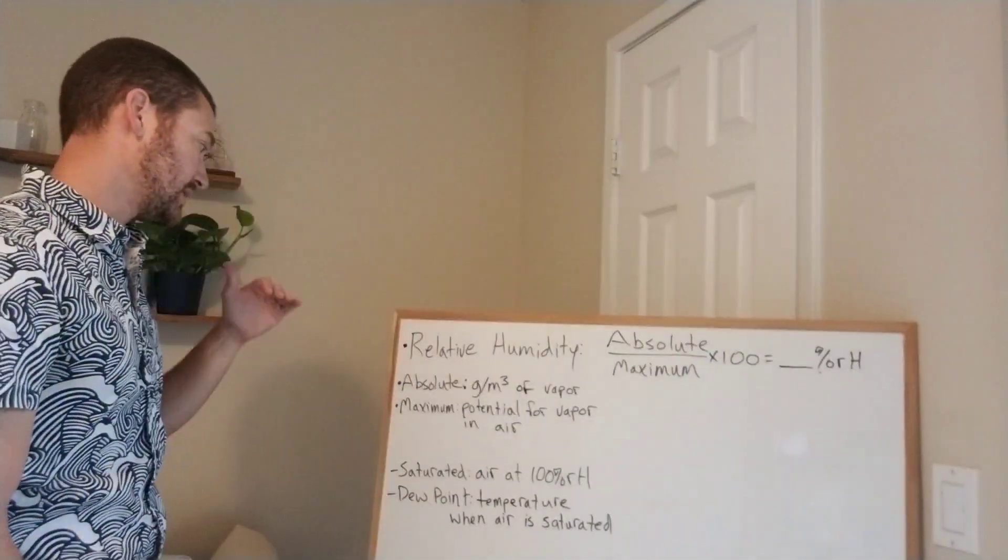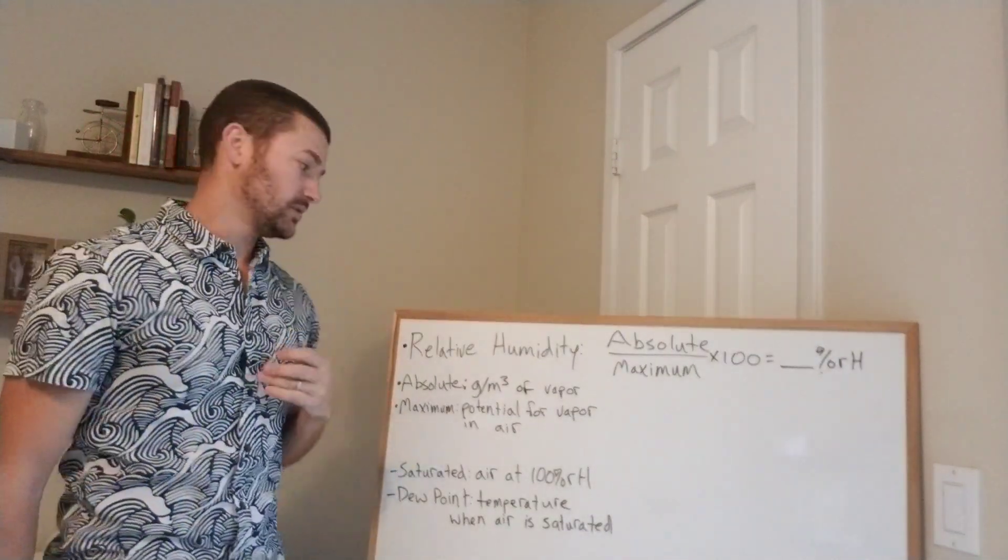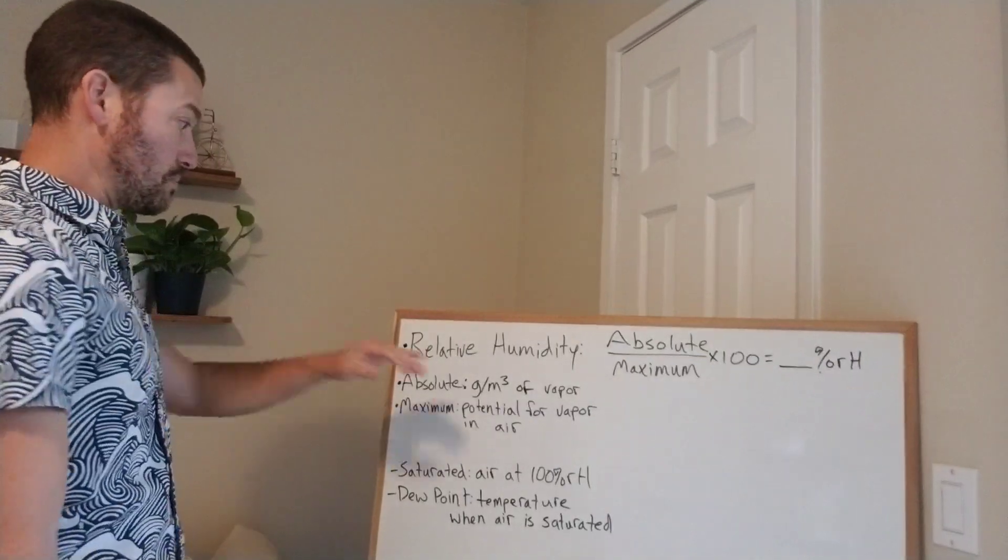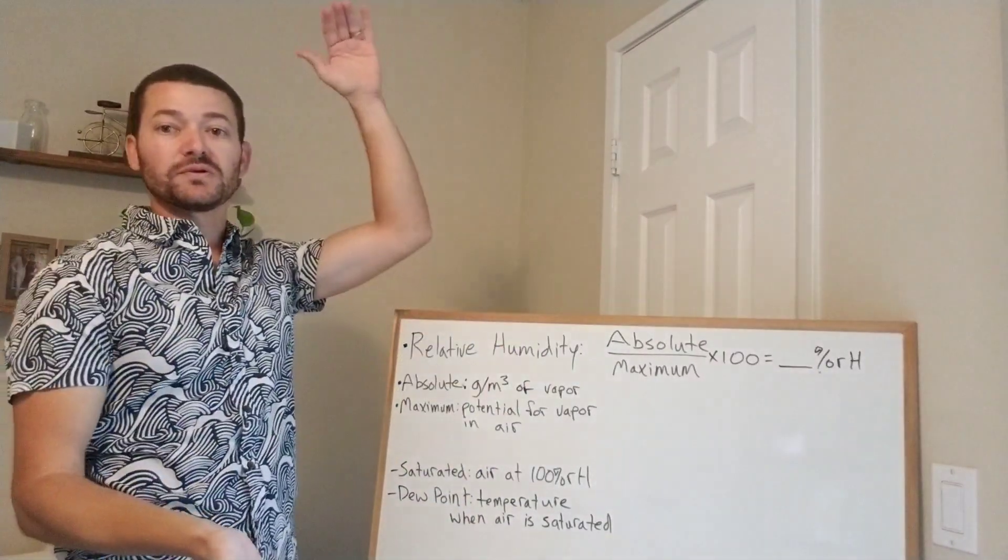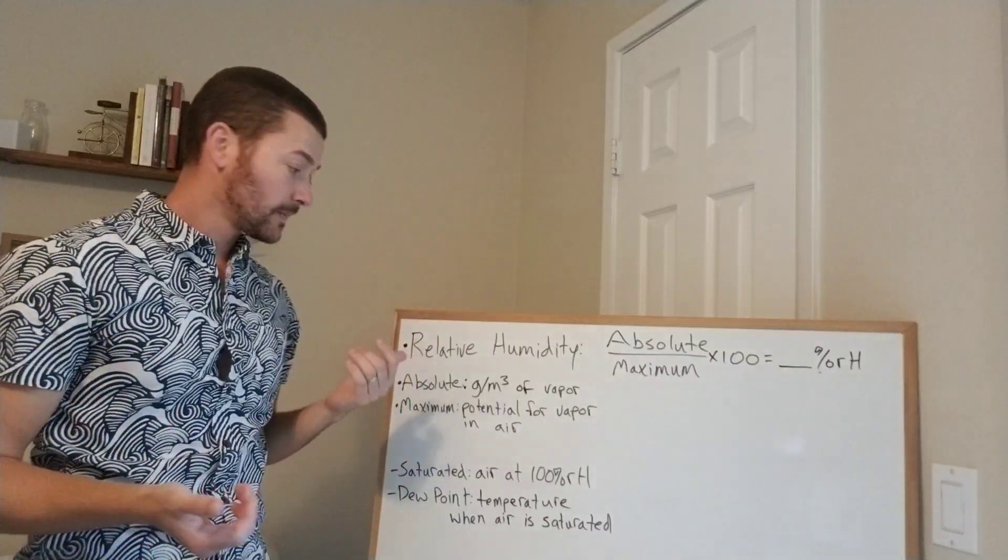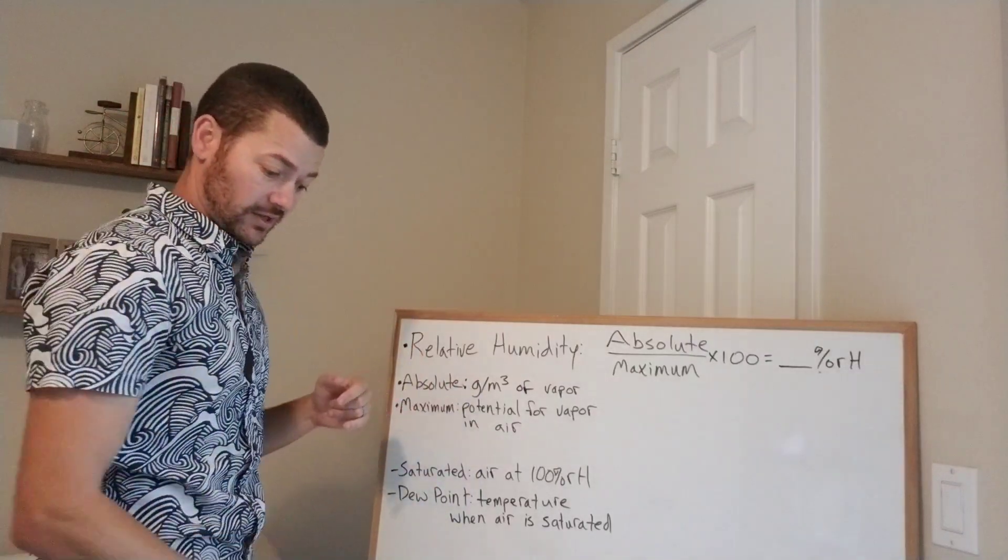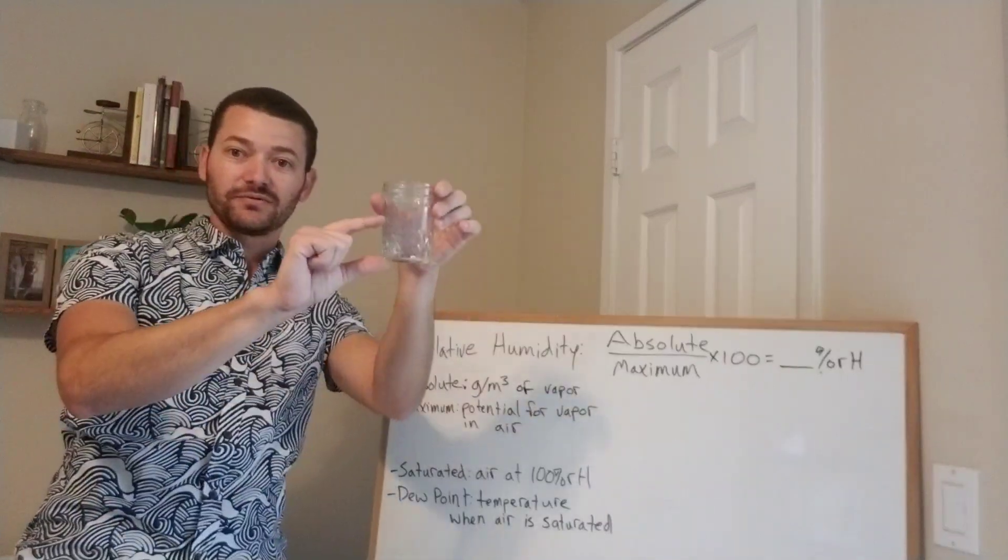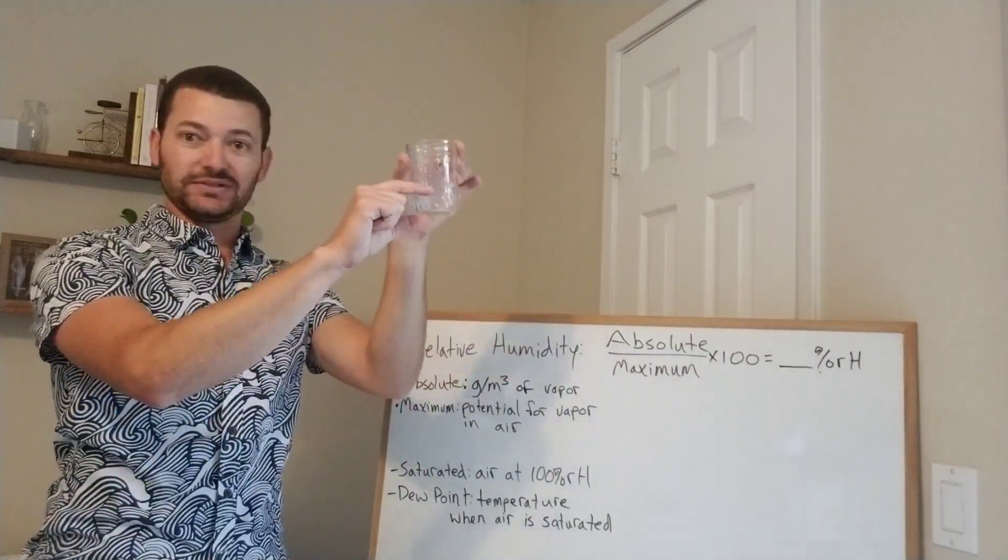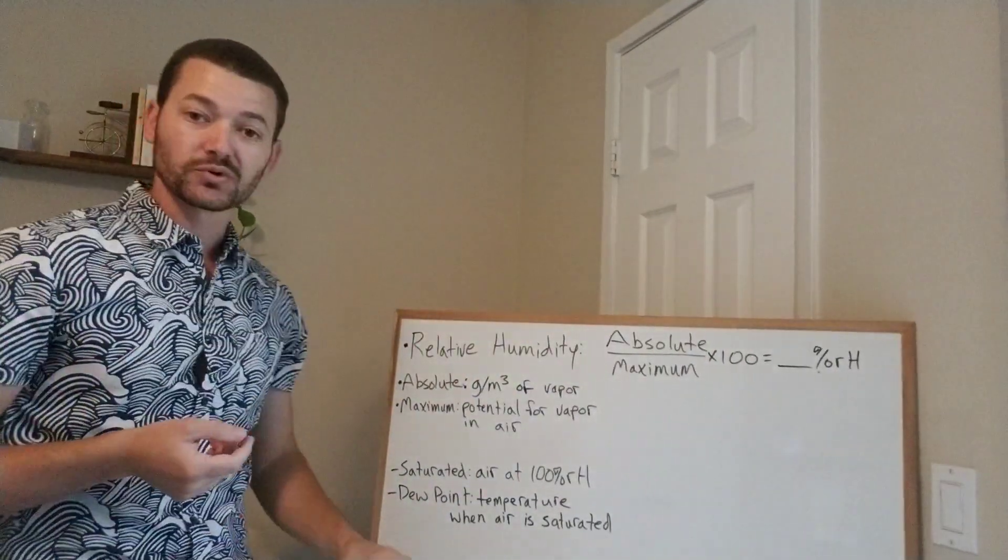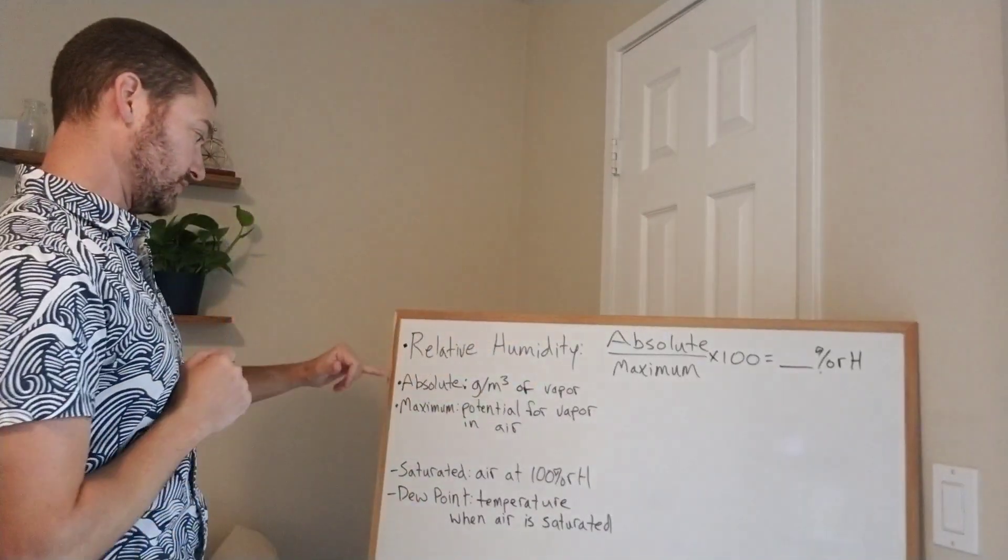Now that is based on the absolute humidity, which is measured in grams per cubic meter. So imagine you have a cubic meter of air, a three foot by three foot by three foot box of air. And then you're measuring the actual grams of water vapor in it. Let's say a gram is this much water, but it's an actual weight. So how much water do you have in that cubic meter of air? That is absolute humidity.